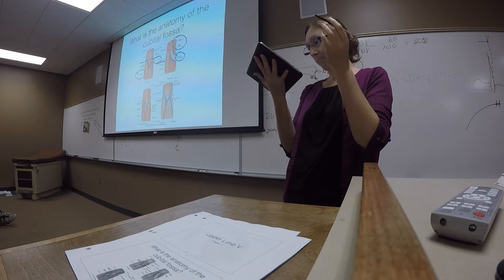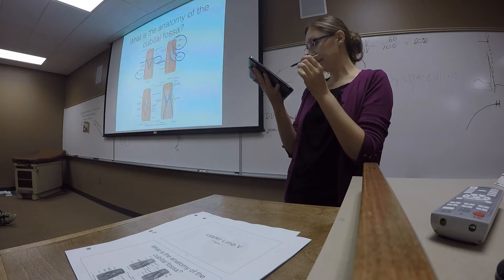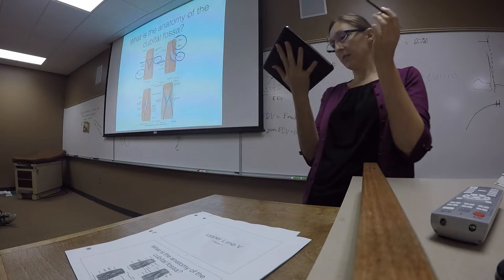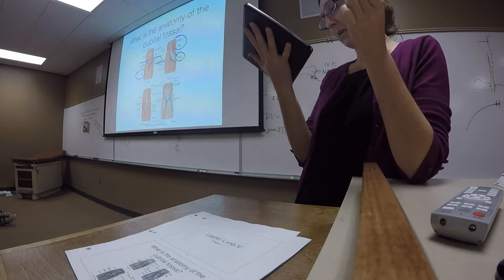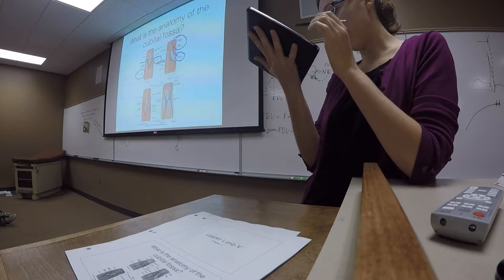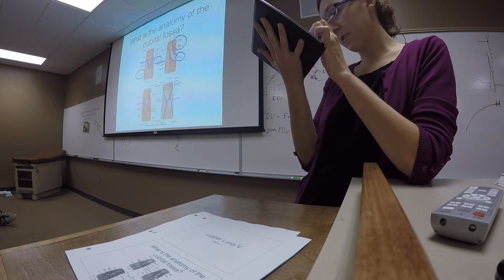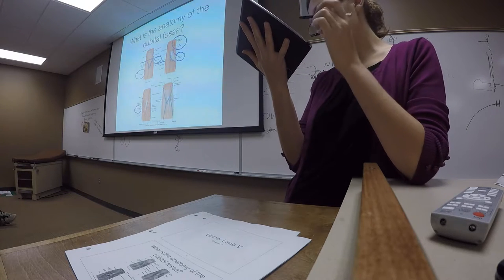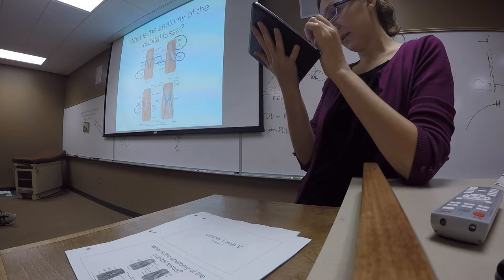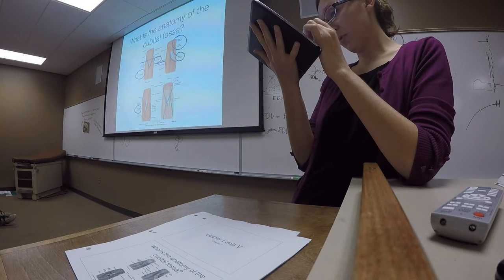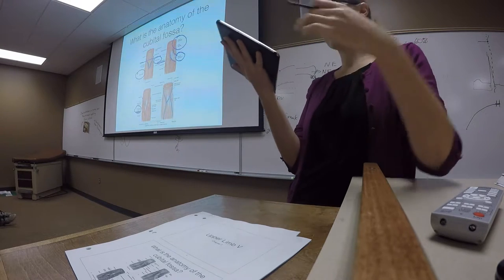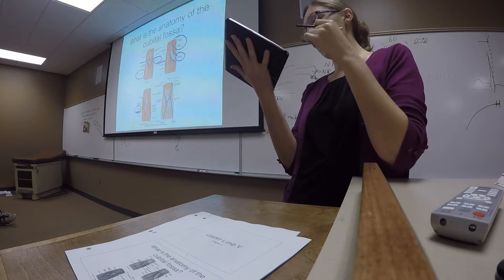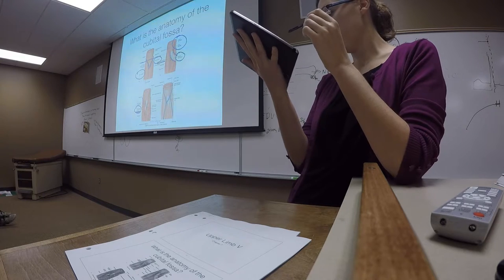The radial nerve comes in on the lateral side of the cubital fossa, and this is where it sends its deep branch down that wraps around to the back of the forearm.